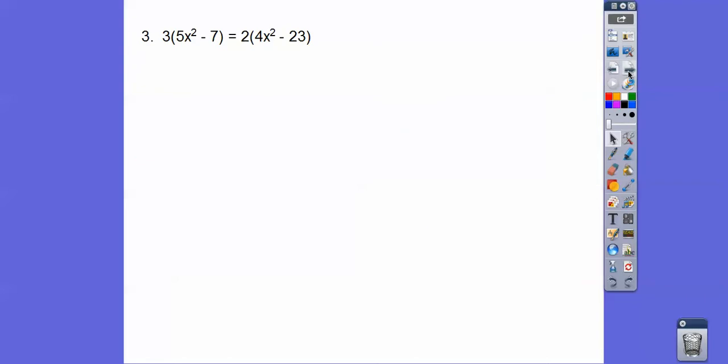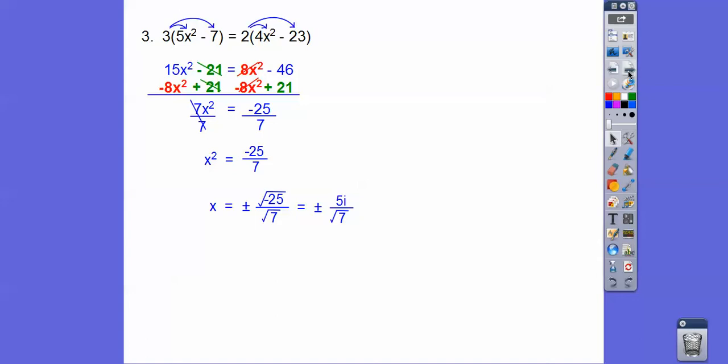Here we're going to distribute the 3 through and the 2 through, and then we're going to combine like terms, so we'll subtract the 8x squared and add 21 to both sides. That gets us 7x squared equals negative 25, another imaginary solution. We're going to square root both sides, and the square root of 25 is 5, so the square root of negative 25 is 5i. Then we're going to get rid of that radical, so multiply by 1. Our 1 is root 7 over root 7. So we get plus or minus 5 root 7 over 7i. They like to put this i after all the numbers. This is a number, and this i tells us it's an imaginary solution.